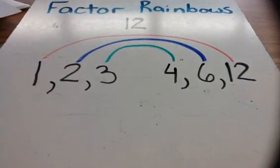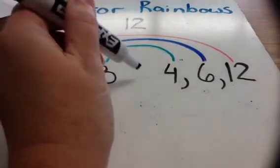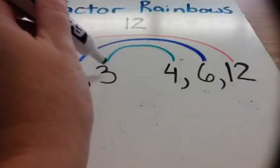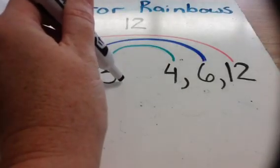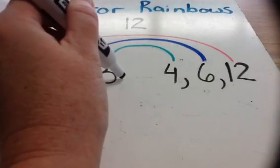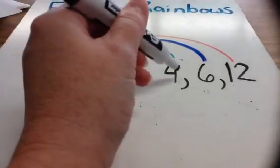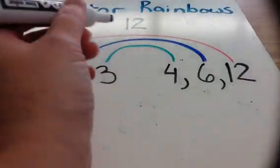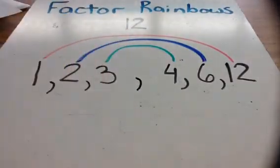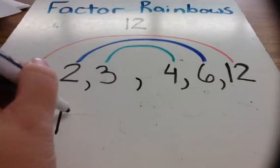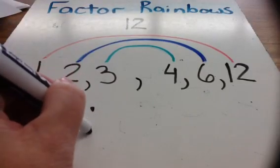Now I know that I am done with my factor rainbow because when I start on the left and I'm counting 1, 2, 3, the next number would be 4. But I'm not going to put 4 right here on the left because 4 is already on the right. When I get to a number that's already on the right side of my rainbow, that's when I know that I am finished.